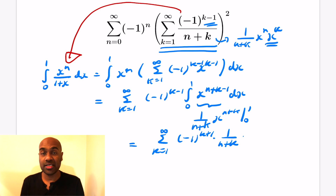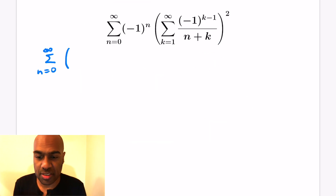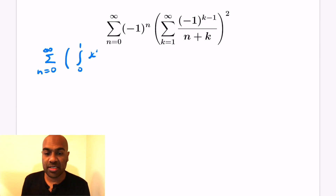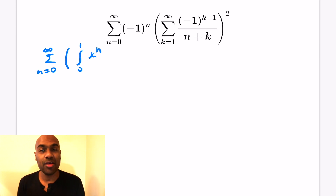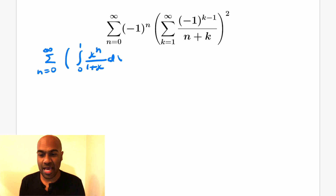That's our first key step — using Taylor series to convert the inner sum to an integral. So the sum we're interested in is the sum n equals 0 to infinity of the integral from 0 to 1 of x to the n over 1 plus x dx, all squared.